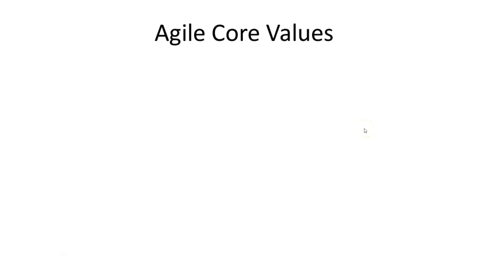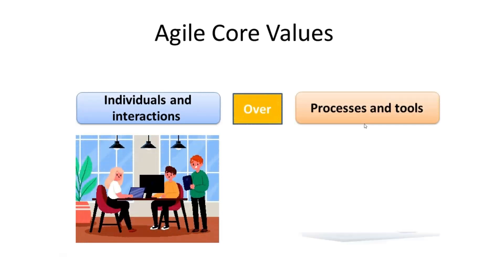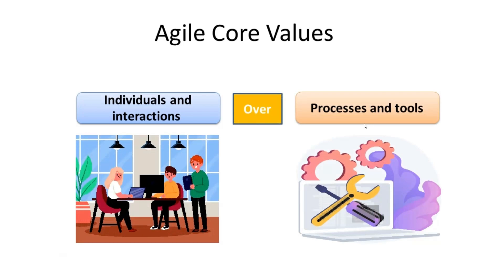Starting with core values. Agile manifesto captures 4 core values that are fundamental to the Agile methodology. The first one is individuals and interactions over processes and tools. Agile manifesto emphasizes that individuals and their interactions are more important than processes or tools. It encourages fostering a supportive and communicative environment where team members can interact freely and collaborate together more frequently. A motivated and well-communicative team is capable of solving any complex problem even if the processes or tools are not perfect.